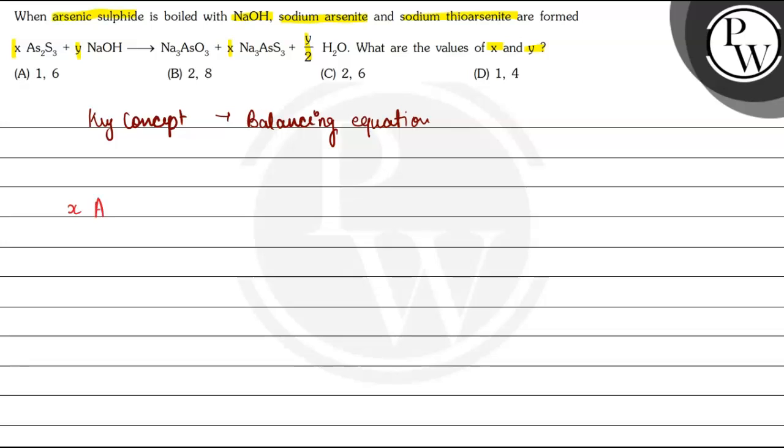X As2S3 plus Y NaOH forms Na3AsO3 plus Na3AsS3 plus Y by 2 H2O.